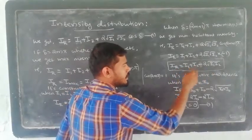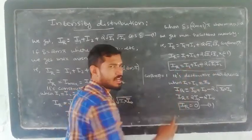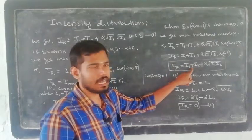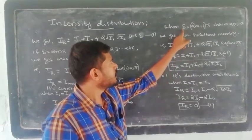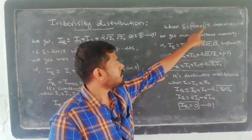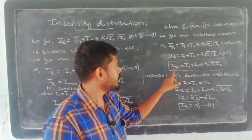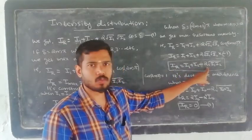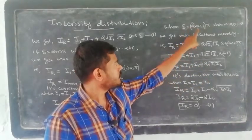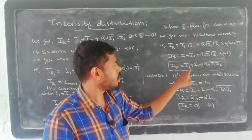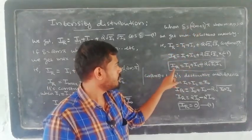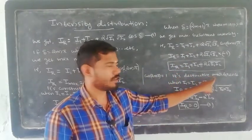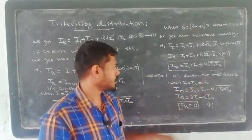The resultant intensity under this condition is: Ir = i1 + i2 + 2√(i1)·√(i2)·(−1), which gives Ir = i1 + i2 − 2√(i1·i2). This is the minimum intensity condition, satisfying destructive interference when delta = (2m+1)π.